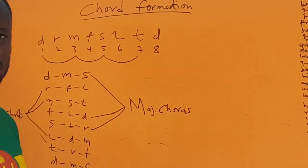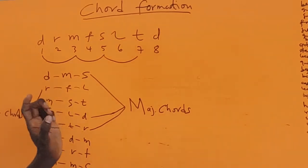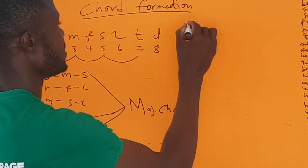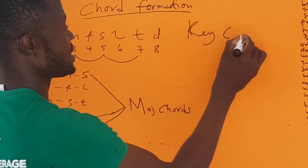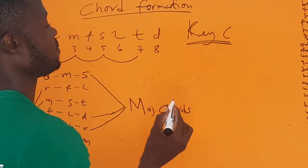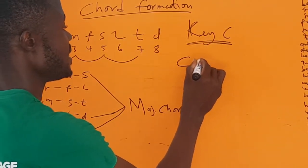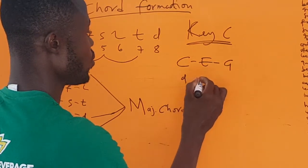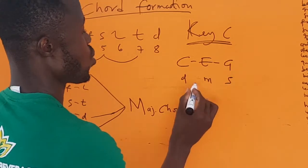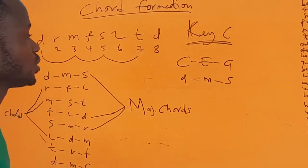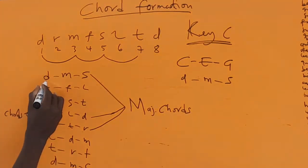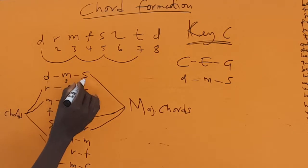Whether a chord is major or minor depends on the third. Let's take C key as an example. In C, we have C, E, and G — that is do, mi, and so — forming the C major chord.